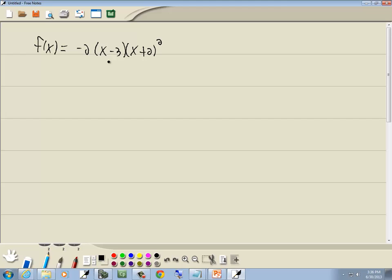First part, find the zeros. Well that means set it equal to zero and solve. So we got negative 2, x minus 3, x plus 2 squared and set it equal to zero.